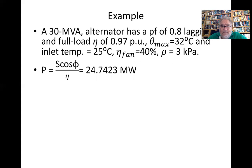So P = S × pf divided by the efficiency, which gives us 24.7423 megawatts. The losses are the output minus the input.